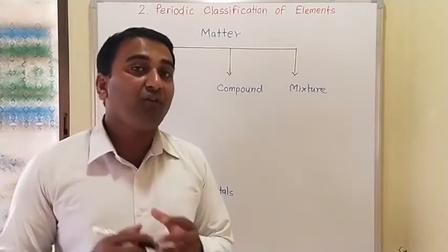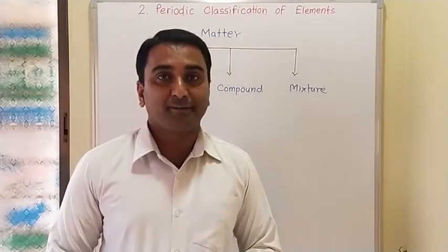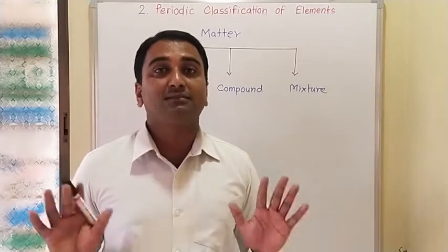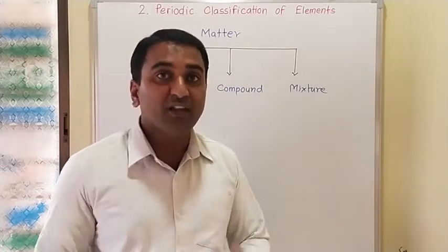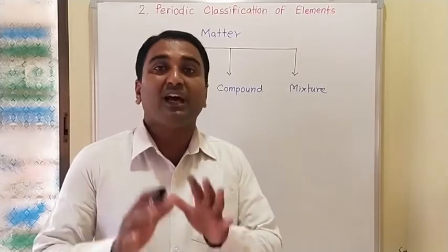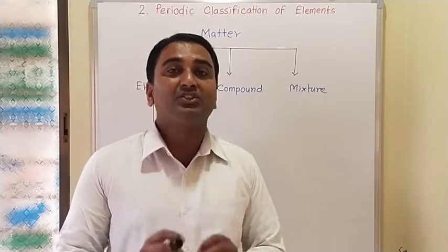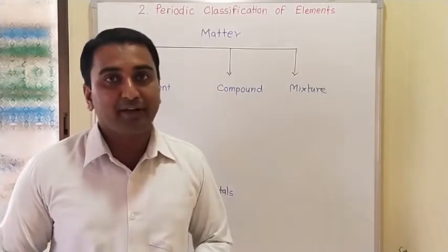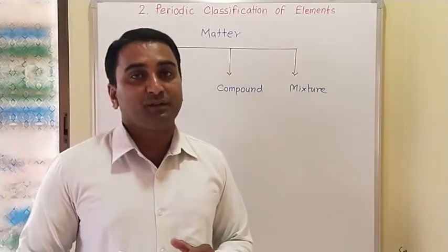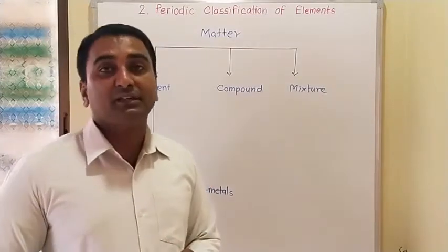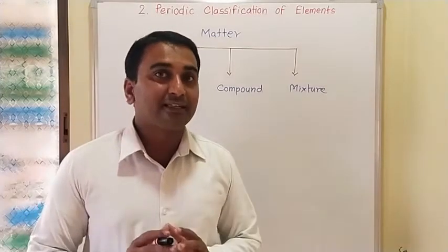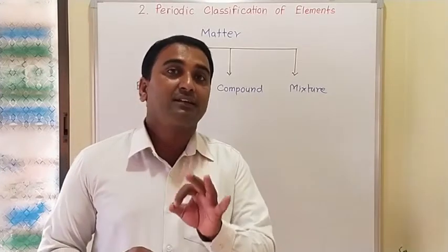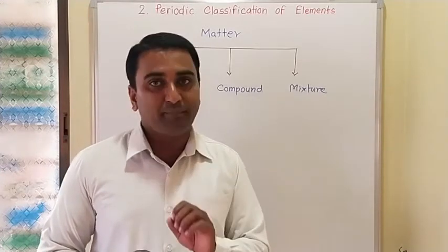The first question: what are the types of matter? Everything we observe around us is matter. We are surrounded by matter, and each and every object is made up of matter. Generally it is considered that solid, liquid, and gaseous are three types of matter, but these are actually states of matter.